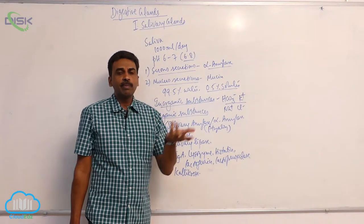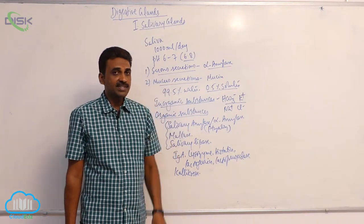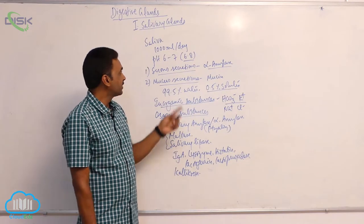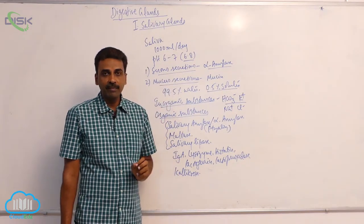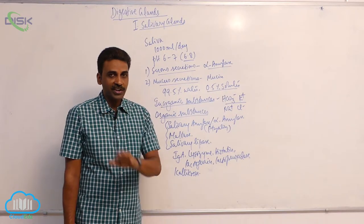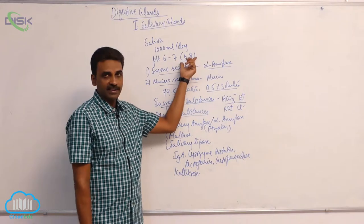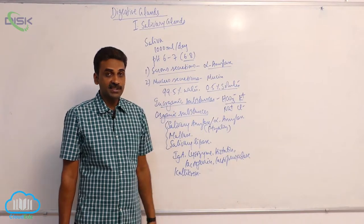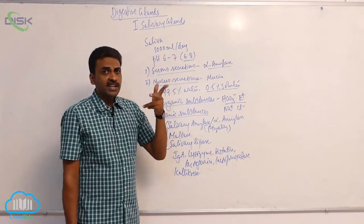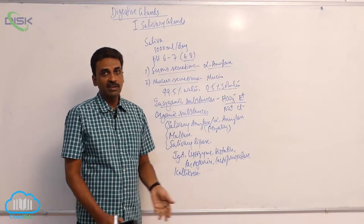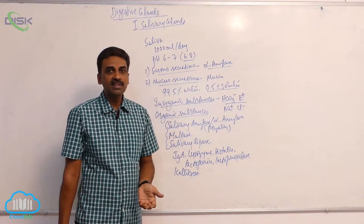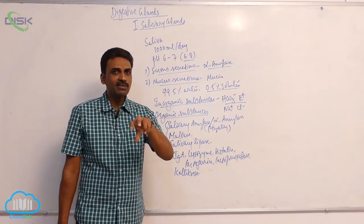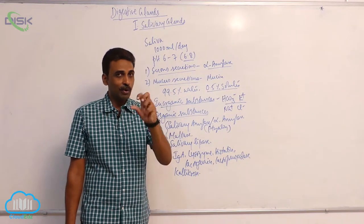To summarize: the secretions produced by both major and minor salivary glands are called saliva. At least a liter of saliva is produced per day at a rate of 1 ml per minute. The pH varies between 6 and 7, with the textbook figure being 6.8 — slightly acidic. Two types of secretions are produced: serous secretions, whose major enzyme is salivary amylase, and mucous secretions containing the protein mucin, which mixes with water to become mucus and provides lubrication.